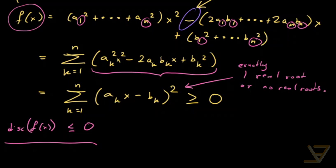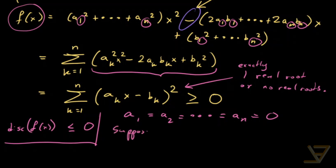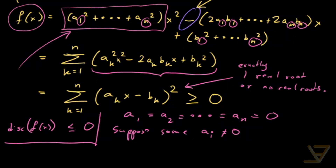But we need to find the equality case. There are two cases to point out. One is where a1 equals a2 all the way through to an — they're all equal to 0, in which case equality definitely holds. So suppose some ai is not 0. Then we have a genuine quadratic function because the leading coefficient is not 0, and in that case we have exactly one real root.